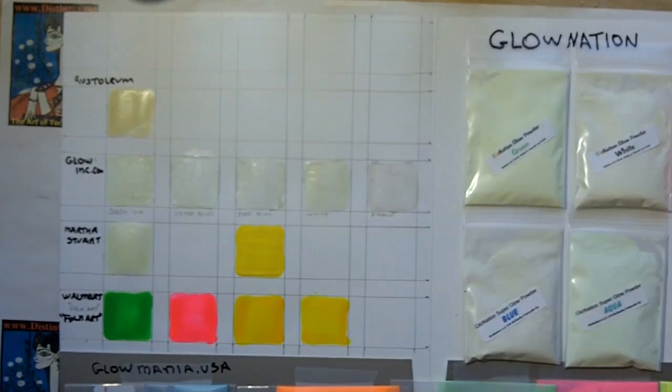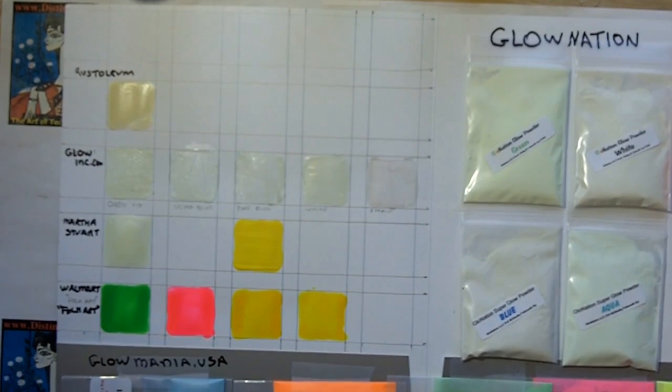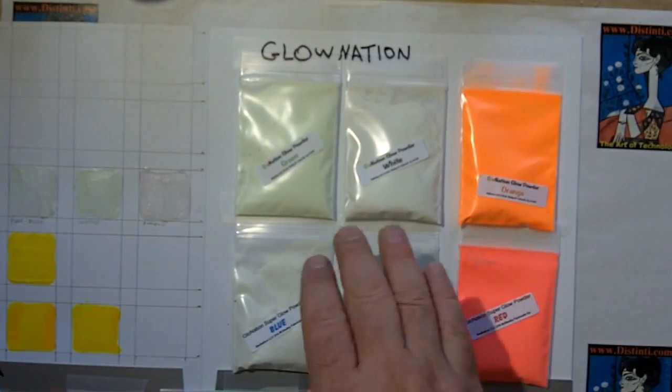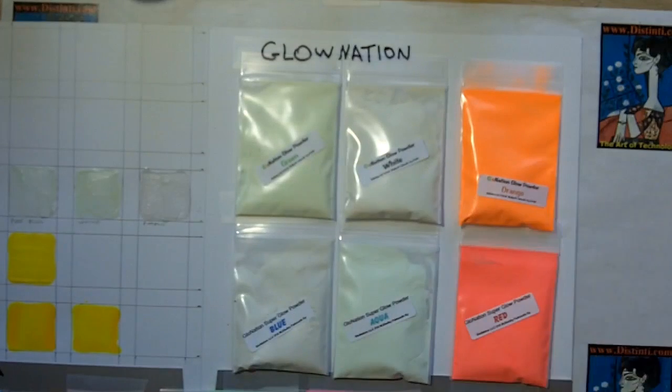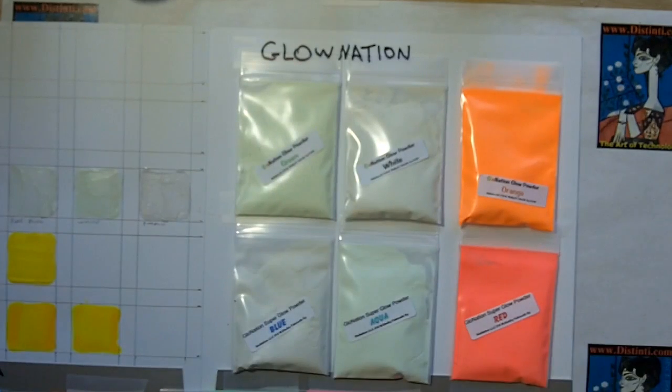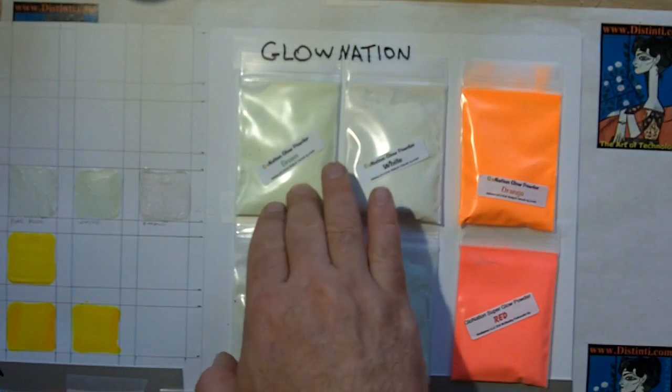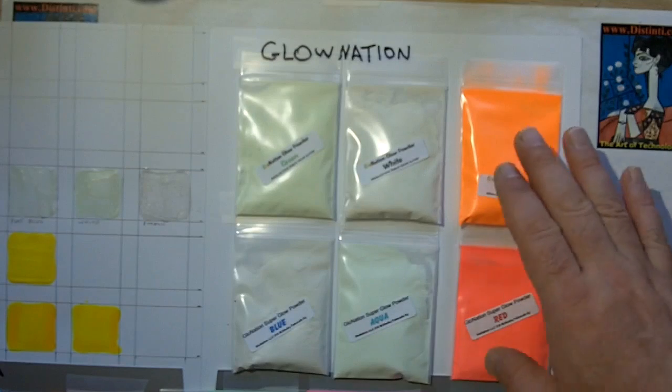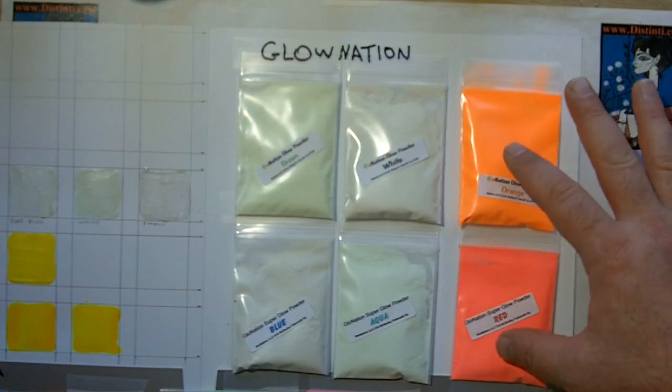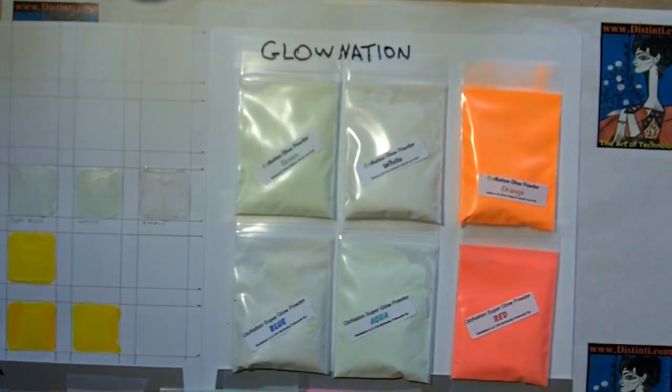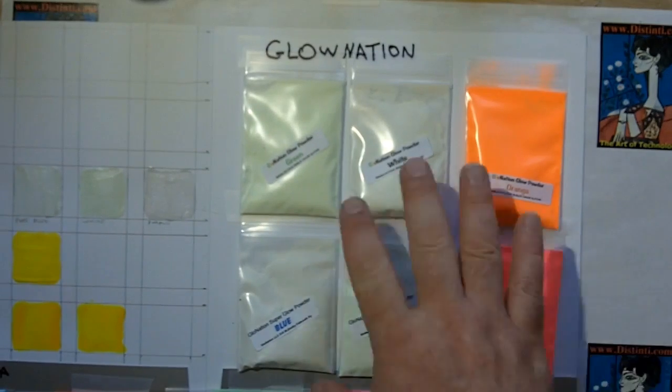As far as the powders go, we've got powders from two different manufacturers. These over here are from Glow Nation. This is their green, which seems to be the most powerful, potent color they have. These powders are very fine, and I believe they're strontium-based. They have some that have color during the day and have the same color when they glow. Others are just white or off-white, but under darkness when they give off their glow, they're different colors.